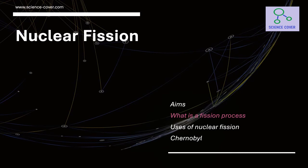Let's start by looking at what we mean by a nuclear fission process. Some atoms are unstable — we know these atoms as radioactive. We also know that they have the potential to break down into smaller elements at any given time. This is a random decay process.